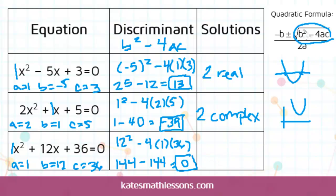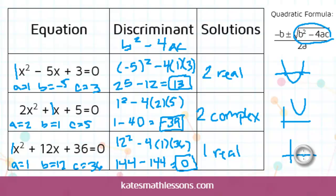If you look back at the formula, that means you end up with a 0 under the square root. The square root of 0 is just 0. So in this case you would be adding 0 and then subtracting 0. Nothing happens when you add or subtract 0, so you're going to end up with the same answer twice — really just one answer. It's a real answer because the square root of 0 is 0, which is a real number, but you only have one of them. If you think about the graph, since it only has one solution, it's only going to have one x-intercept. So the graph will come down, just hit the x-axis, and go back up — or come up, just touch, and go back down.